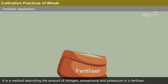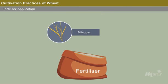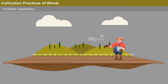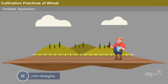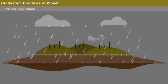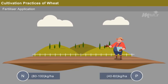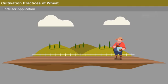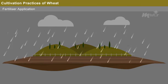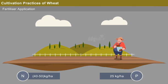NPK Method: It is a method describing the amount of nitrogen, phosphorus, and potassium present in the fertilizer. Nitrogen is required for leaf growth, phosphorus for root formation and stem growth, and potassium for plant immunity. For timely sowing, the nitrogen requirement is about 120 to 150 kilograms per hectare, and the phosphorus requirement is around 40 to 60 kilograms per hectare. For late sowing, the nitrogen requirement is 80 to 100 kilograms per hectare and the phosphorus requirement is 40 to 60 kilograms per hectare. In both cases, the potassium requirement is 40 to 50 kilograms per hectare, and the sulfur requirement is about 25 kilograms per hectare.